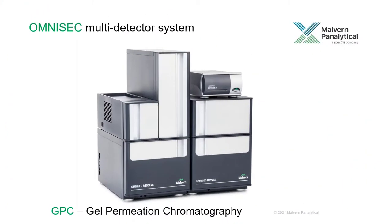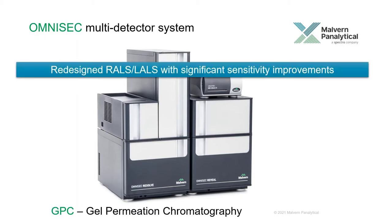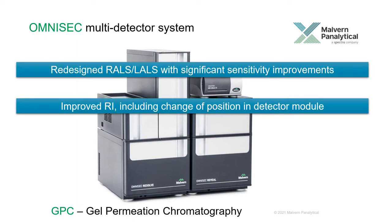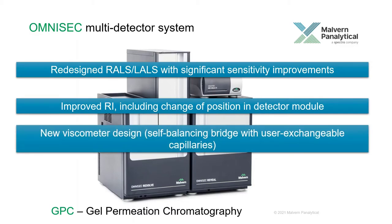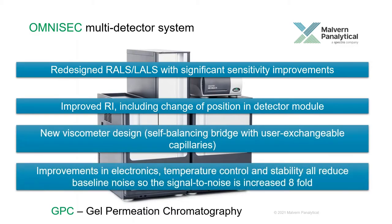Since the launch in 2015, a lot has happened, but many things remain the same. The Omniset system still has the lowest limit of quantification for the absolute molecular weight of BSA.